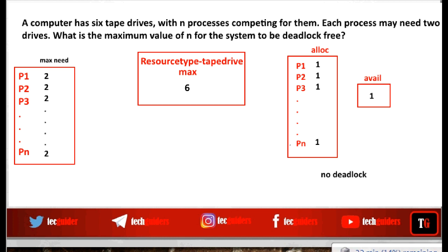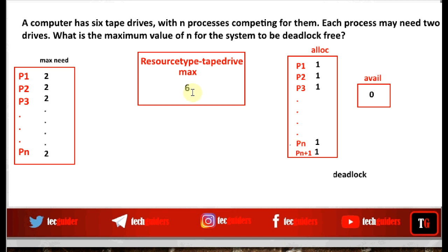If there is one more process also holding maximum minus one resources and requesting one more, the availability becomes zero. All processes are holding some resources and have made a single request, but none of these requests can be satisfied. Hence, there is deadlock. So if we limit the number of processes to a particular extent, we can avoid deadlock with the given number of resources.